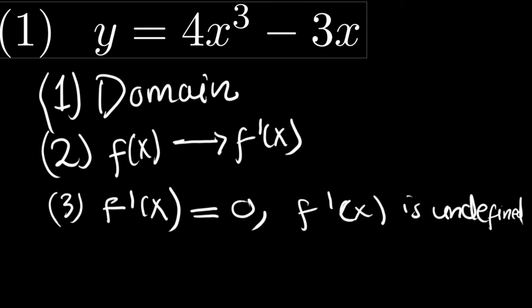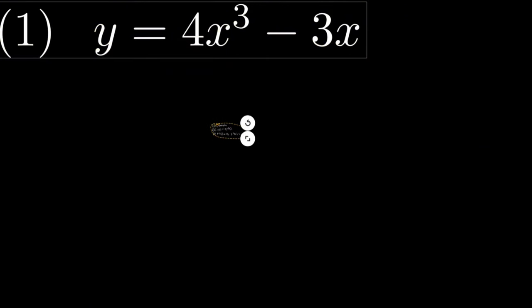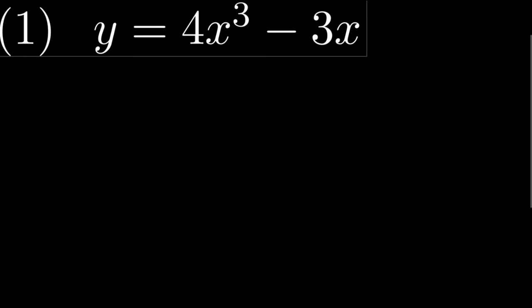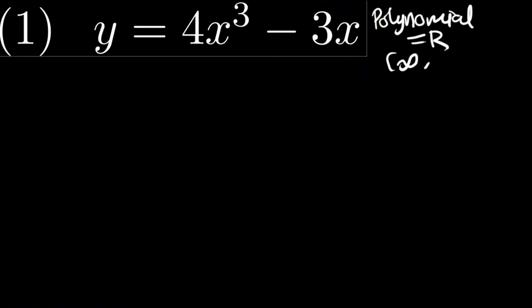Now let us see how we can solve this. First, we will find the domain of this function. Because it is a polynomial, the domain is ℝ, which is from negative infinity to infinity. Now secondly, we will derive this function.